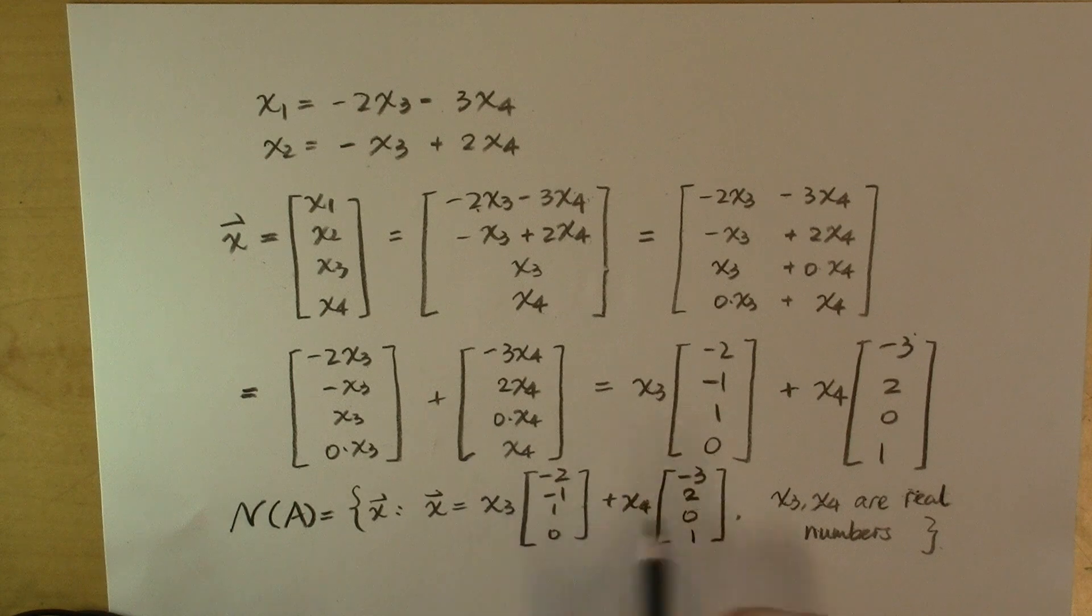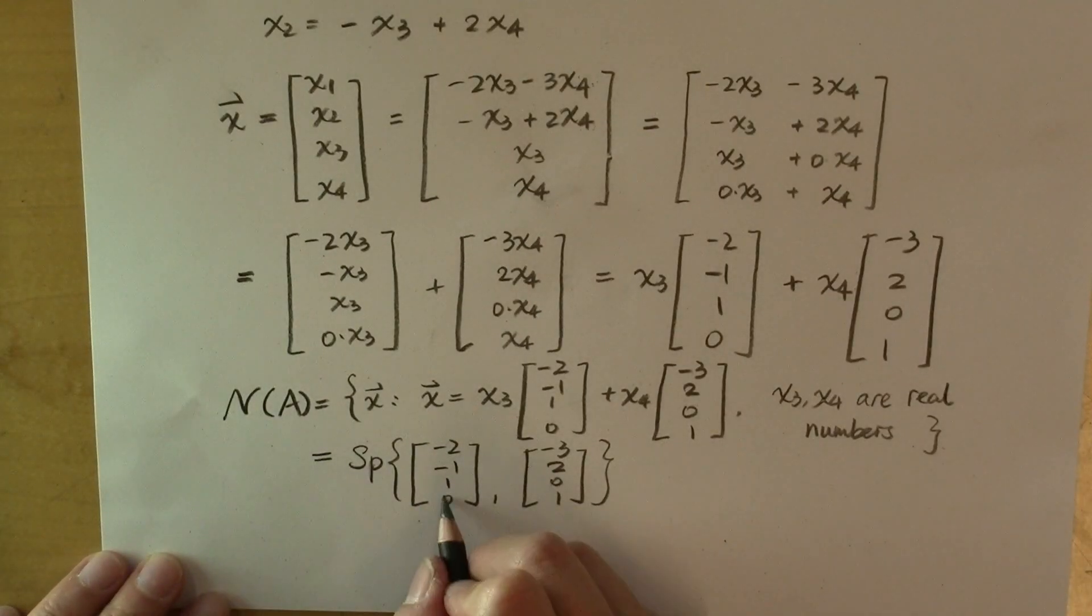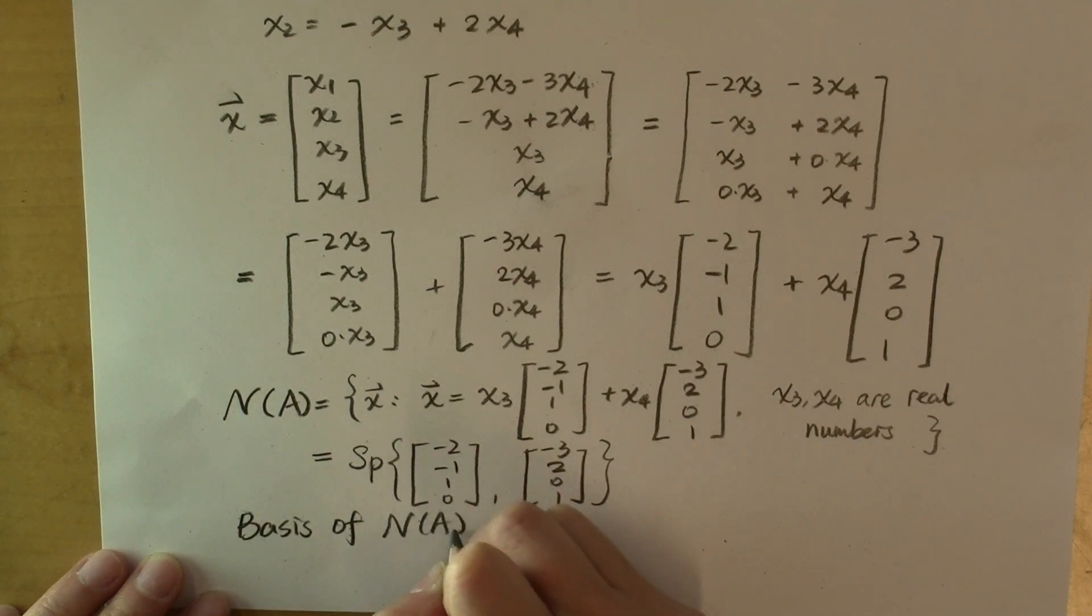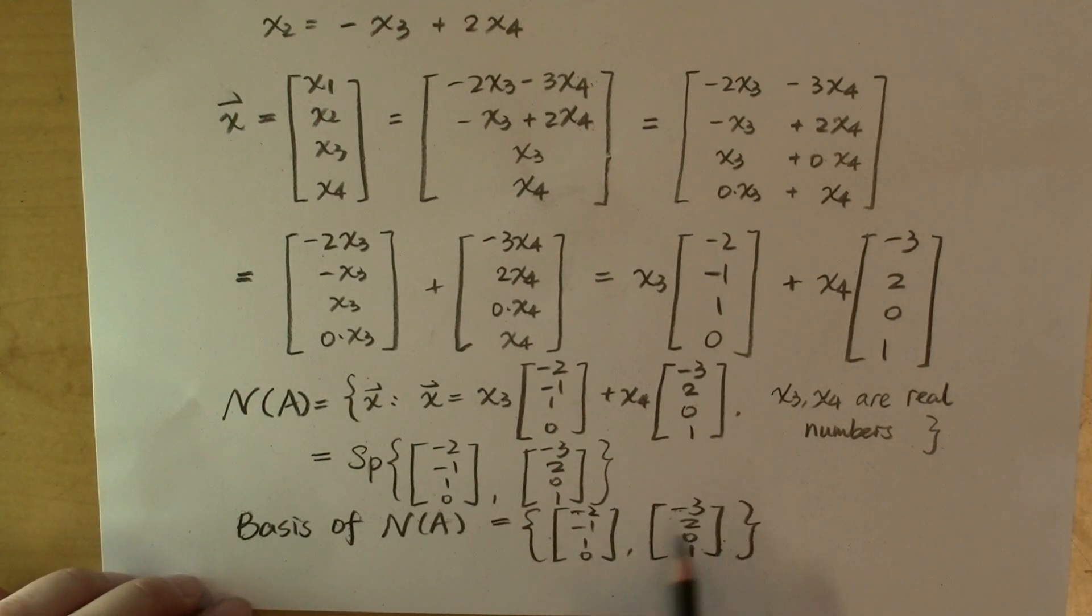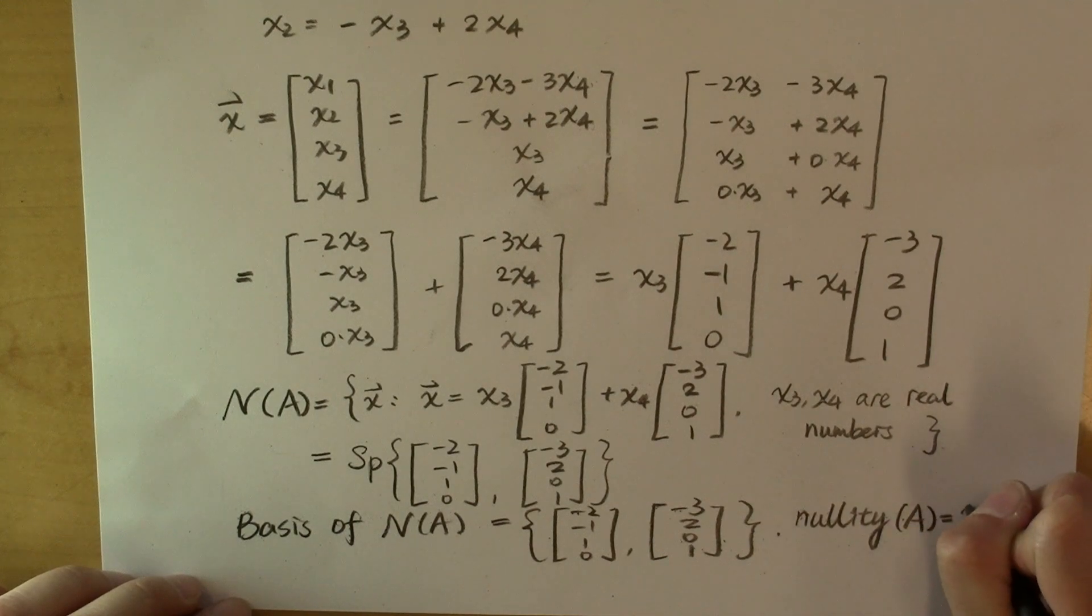And all the vectors satisfying this condition form the null space of A. So you can see that the null space of A is the span of these two vectors: (-2, -1, 1, 0) and (-3, 2, 0, 1). In fact, these two vectors form a basis for the null space of A. And because this basis contains two vectors, the nullity of A, which is the dimension of the null space of A, is equal to 2.